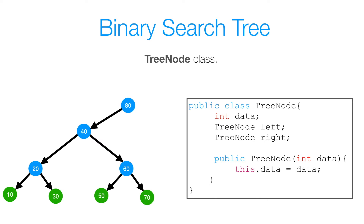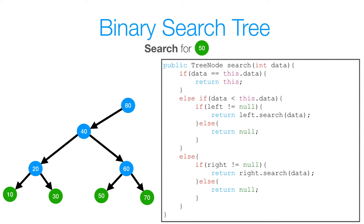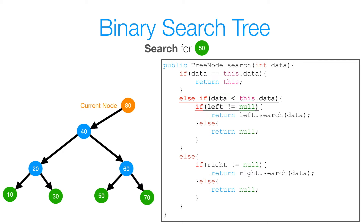Now let's look at the tree class that will be used to implement our search method. We have a TreeNode class with three instance variables: some data associated with every node, and left and right reference variables for the left and right subtrees respectively. There's a constructor that takes in data to initialize the instance variable. Now let's get to the search method. The first thing we do is check if our data of 50 is equal to our current node's data, which is 80. And 50 is not equal to 80, so we check if 50 is less than 80. Since 50 is less than 80, we check if our left is not equal to null — because if left was null, that node doesn't exist in our tree. Since left is not null, we call search on 80's left subtree.